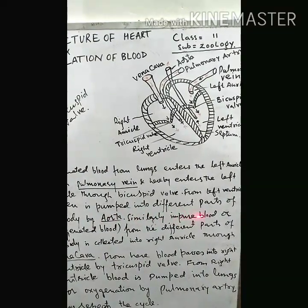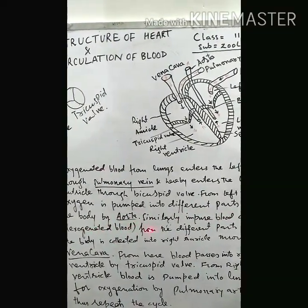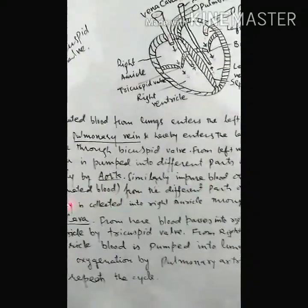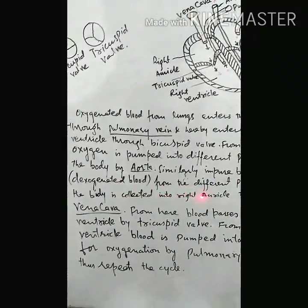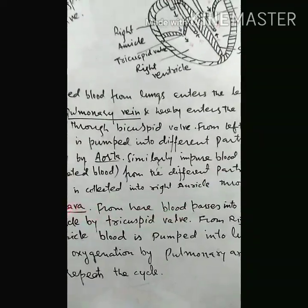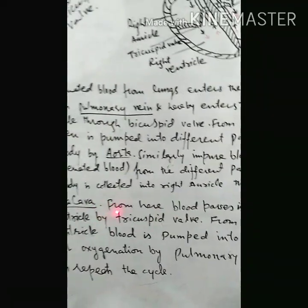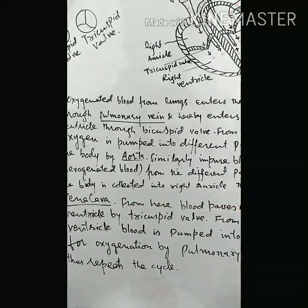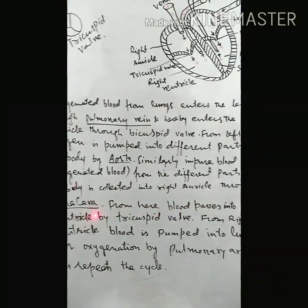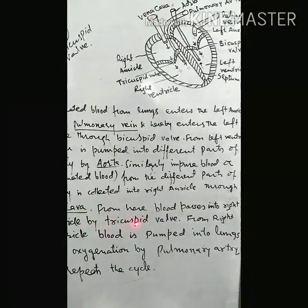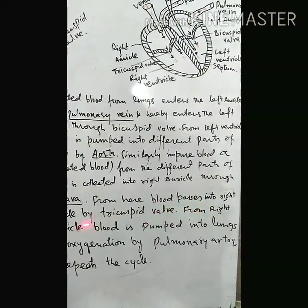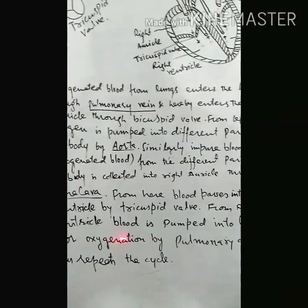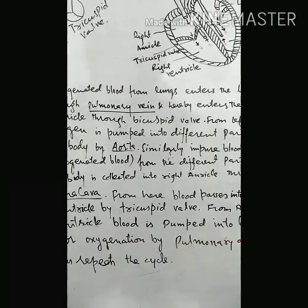Similarly, impure blood or deoxygenated blood from the different parts of the body is collected into the right auricle through the vena cava. From here, blood passes into the right ventricle by the tricuspid valve. From the right ventricle, blood is pumped into the lungs for oxygenation by the pulmonary artery.